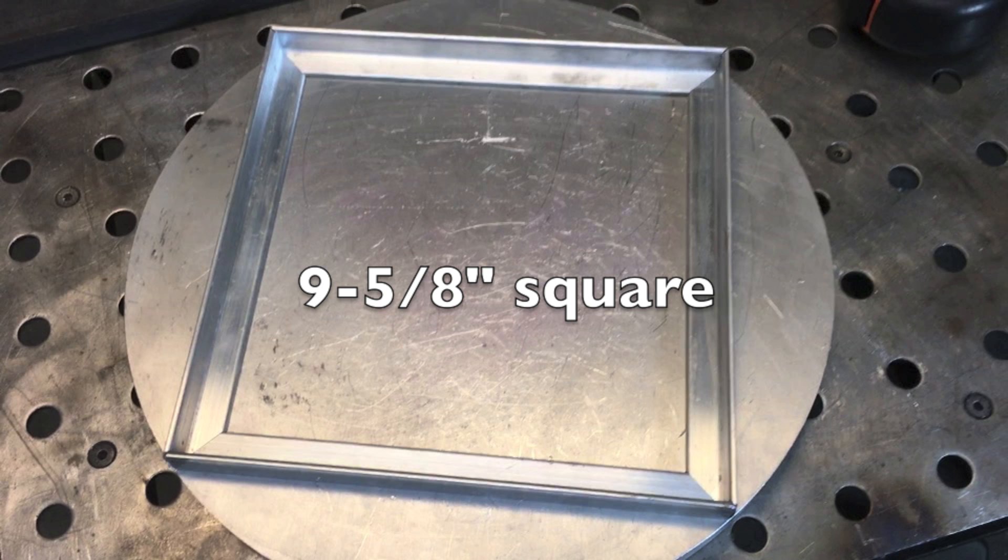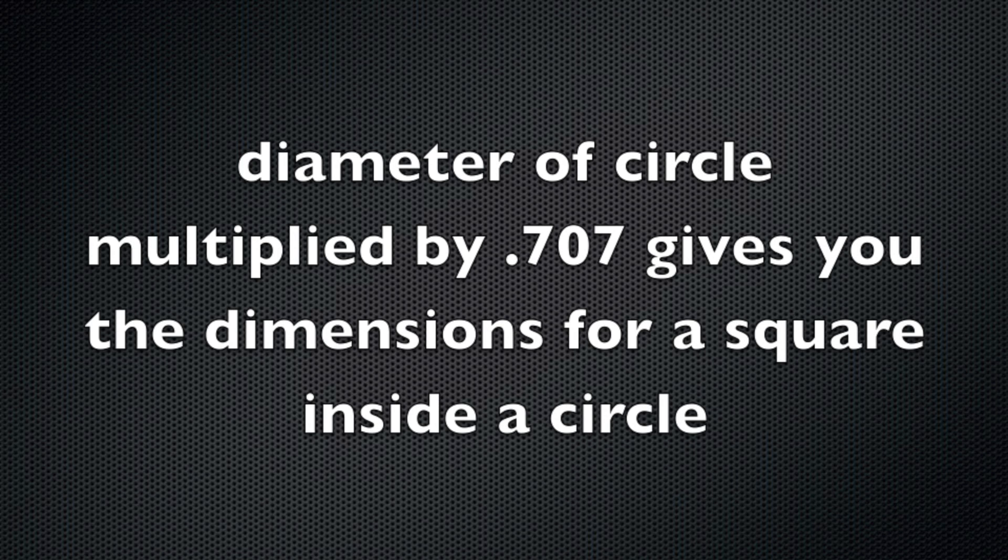No matter if this is 9 inches or 9 feet, doesn't matter if we're using square tubing or angle. You take the diameter of the circle, multiply times 0.707, that gives you the dimensions of each piece that will make a square that will fit inside a circle.